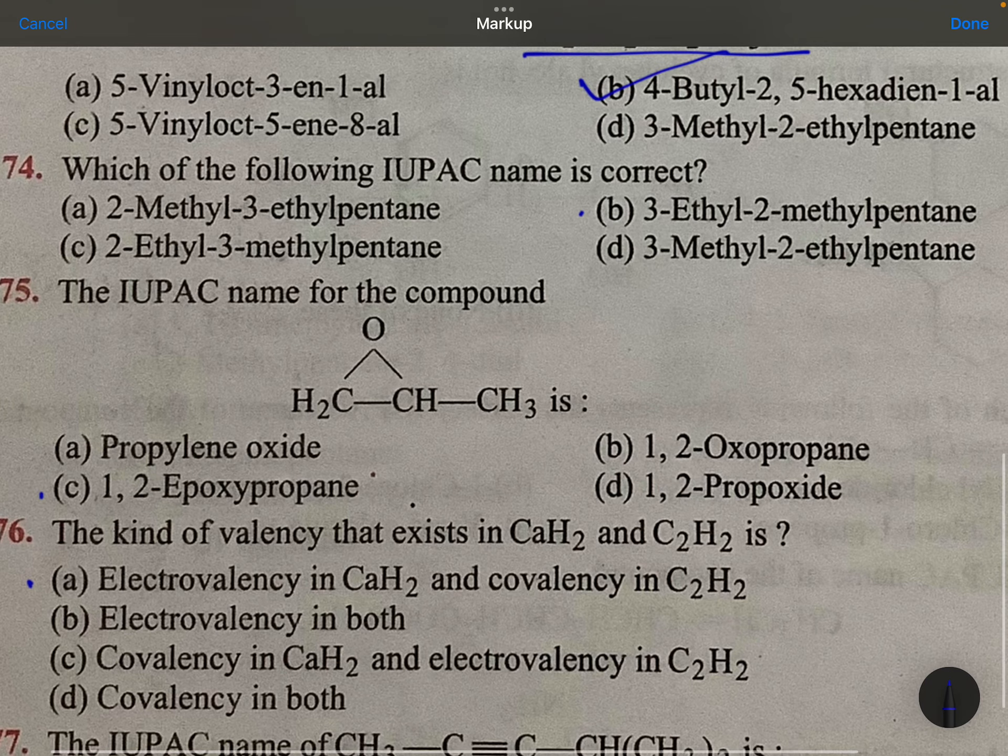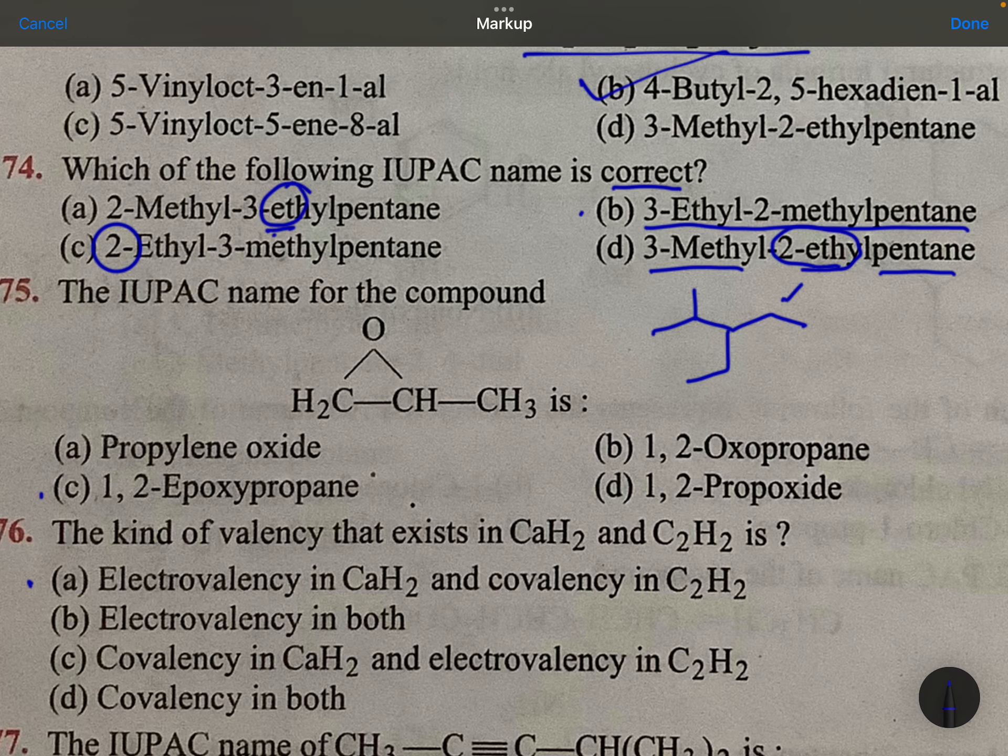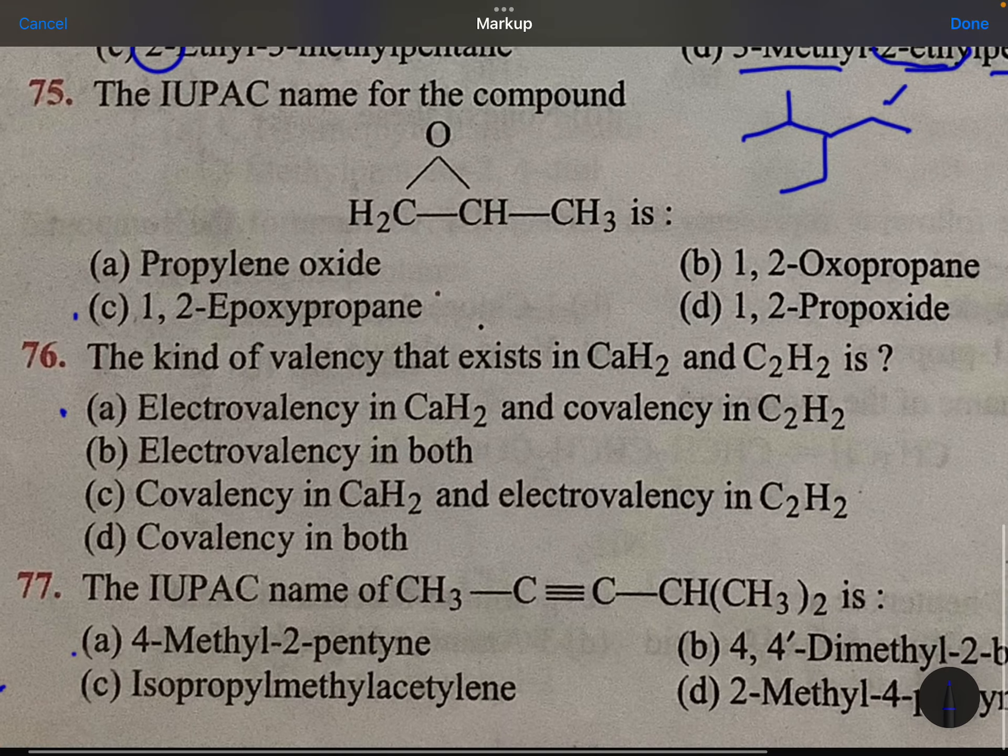Which of the following IUPAC name is correct? He is asking. 3-ethyl, 2-methyl, pentane. This is right. 3-methyl, 2-ethyl. Second place, ethyl is generally not possible. That will go into the long chain. 2-ethyl, not possible. 2-methyl, 3-ethyl, pentane. Not correct because E comes first. Simple logic.